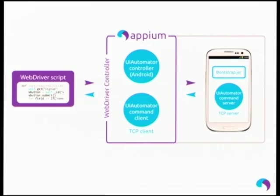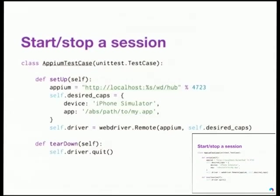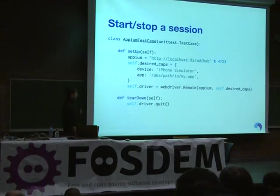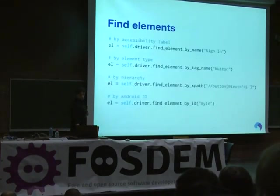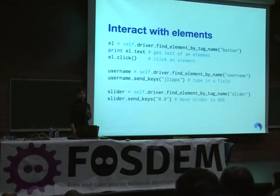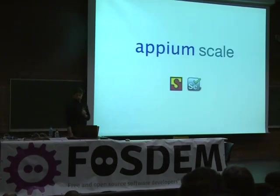How do you start a session? Here's an example using unit tests in Python. You create a WebDriver session and connect to the Appium server on localhost, tell it where your app is, and that's it. You can then access elements in the app similarly to web applications — by accessibility labels, element types, and so on. You can interact with them, send keys, fill out forms, and swipe or slide.